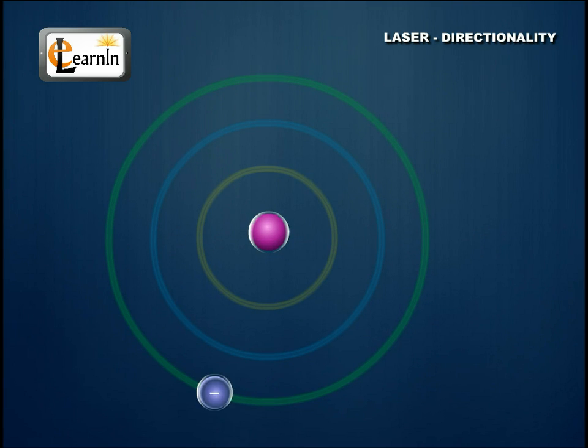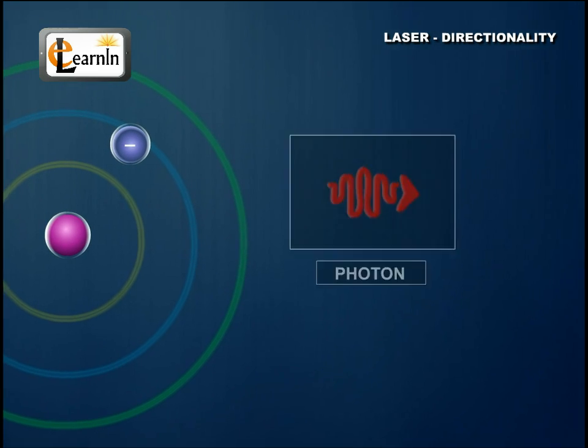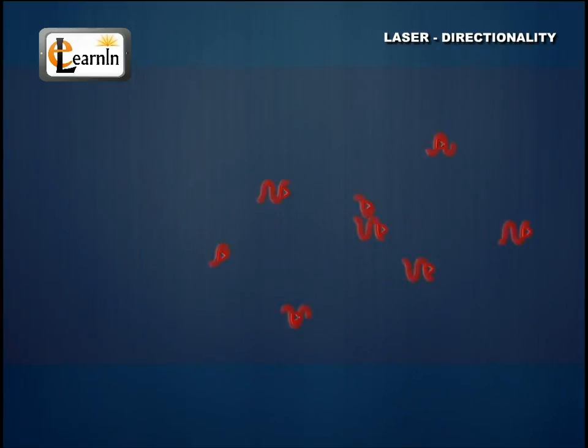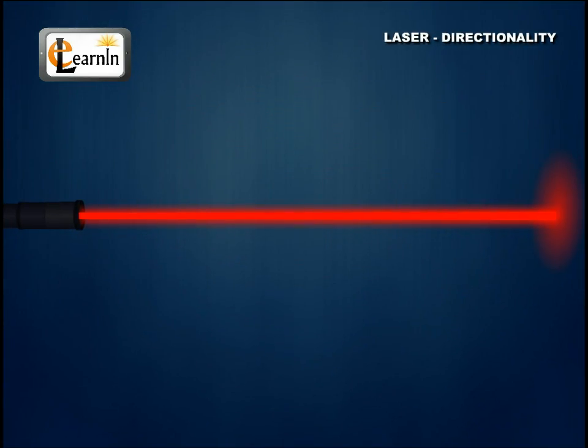The photons are emitted when an excited electron comes back to its ground state. All the millions of photons emitted in a laser are emitted in the same direction and appear in the form of a beam of a laser.